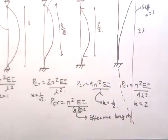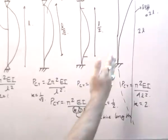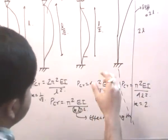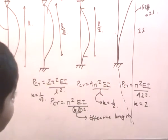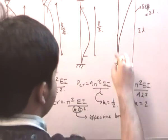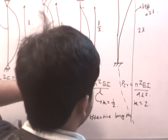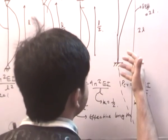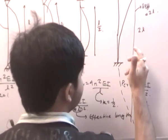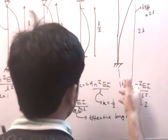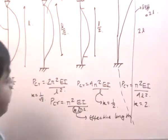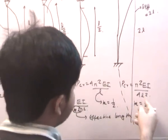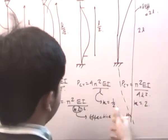The fixed-free case has the least rigidity of the end condition, so the critical load it can sustain is least. Because the rigidity of the end condition is the least, the effective length is highest. And since PCR is inversely related to the square of the effective length KL, a higher effective length means a lesser value of PCR.